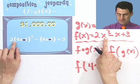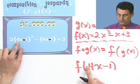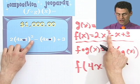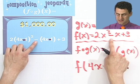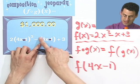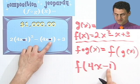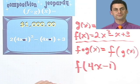2 times the quantity 4x minus 1, all cubed, minus the quantity, notice the gray parentheses there, 4x minus 1, and then plus 3. So in fact, this is the correct answer,